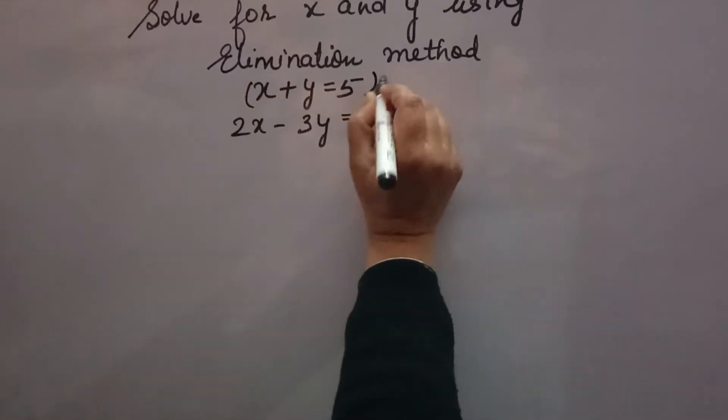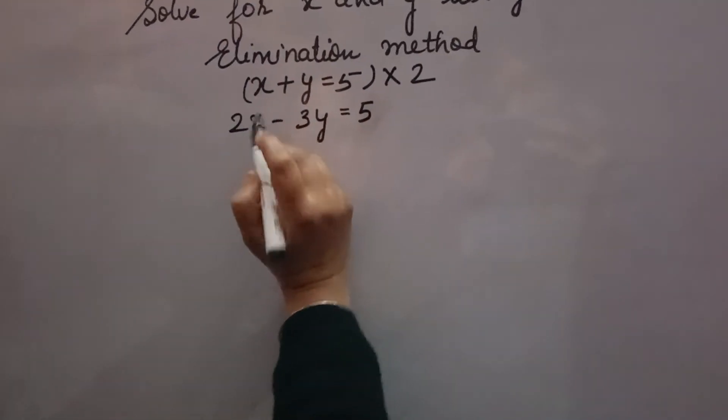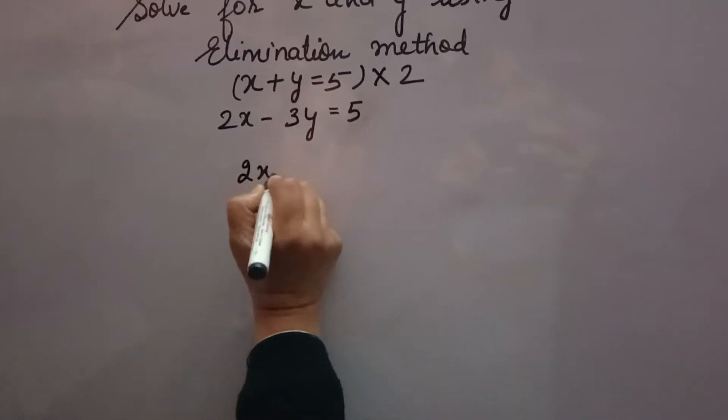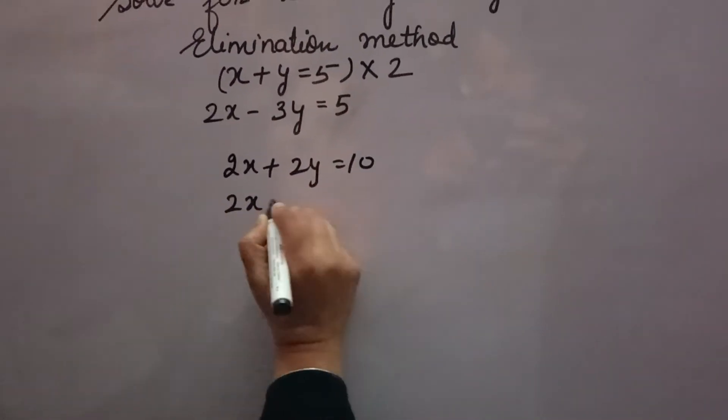So, first equation, you have to multiply by 2 for making the coefficient of x same. You will get 2x plus 2y is equal to 10. Second equation you will write as it is.